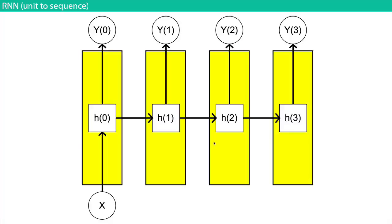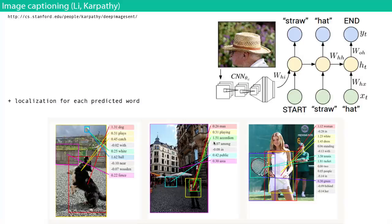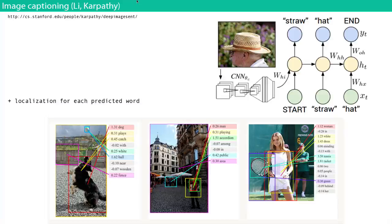In the unit-to-sequence mode, instead of conditioning with a sequence of inputs, we condition with a single input. For example, we can take a recurrent neural network producing output sequences of text and condition it with activations from a convolutional neural network. This is where things get really interesting — we're combining convnets and recurrent neural networks together to do image captioning. This was done by Karpathy and Fei-Fei Li at the vision lab at Stanford — they took a huge dataset of images with human-labeled annotations and designed an architecture to describe images with natural language.